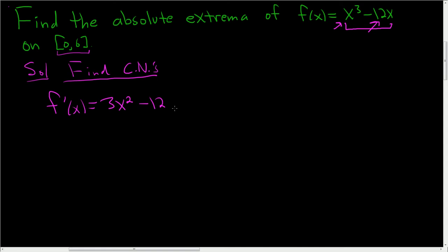Keep in mind, critical numbers are numbers in the domain of the function where the derivative is undefined or 0. So in this case, the derivative is never undefined, so we only care about where it's 0. So you set this equal to 0.